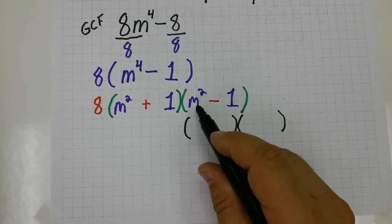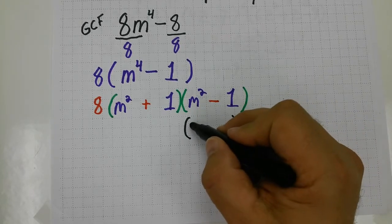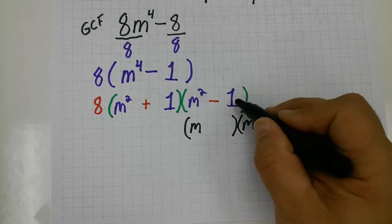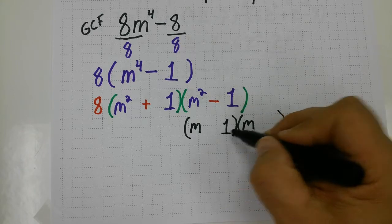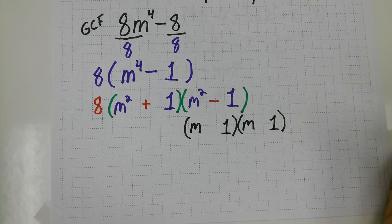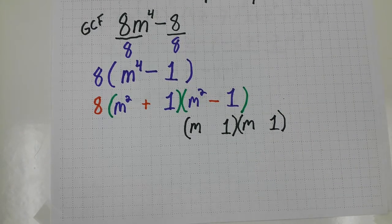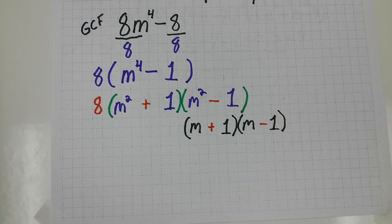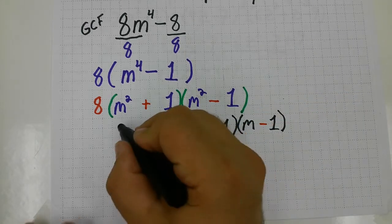So what times what equals m squared? That's going to be m times m equals m squared. And then what times what equals one? Well, one times one equals one. And then signs are going to alternate when it's a difference of two perfect squares.